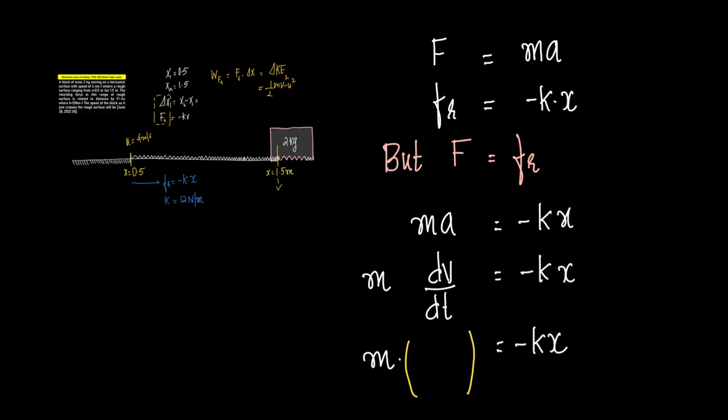We have already discussed how does this come, but we'll just make it one more time. So what is a equal to? a is equal to dv by dt. Now instead of dv by dt, can I write this as dv into 1 by dt?